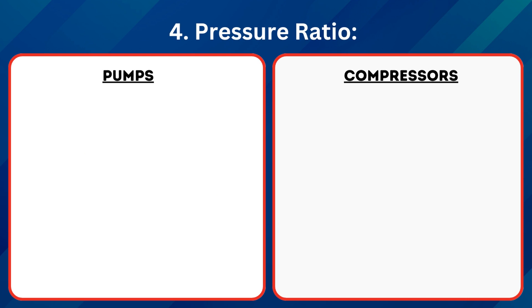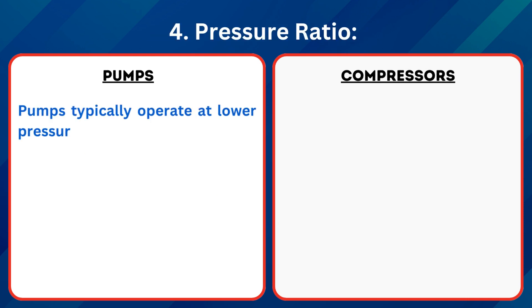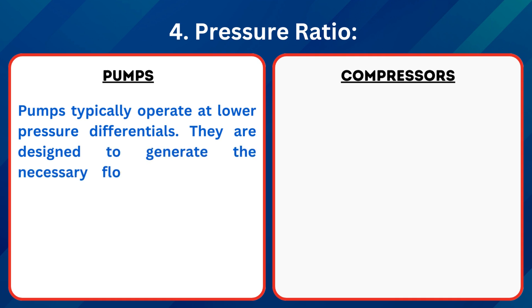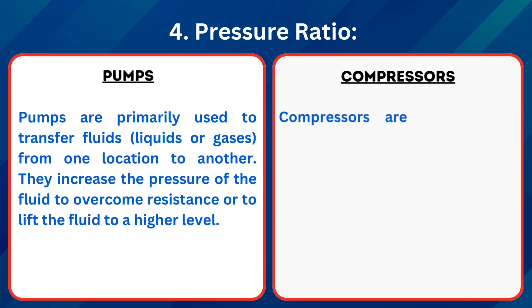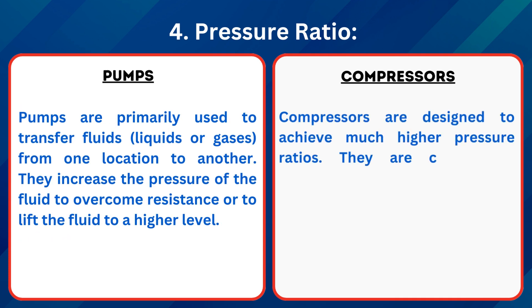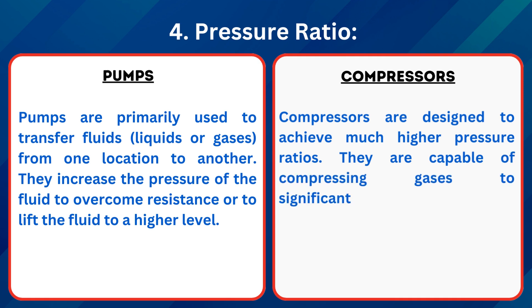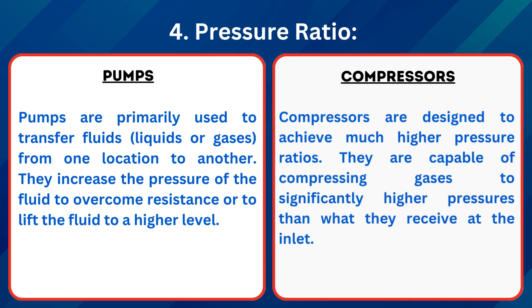4. Pressure Ratio: Pumps typically operate at lower pressure differentials. They are designed to generate the necessary flow rate to move fluids efficiently, without significantly increasing the fluid's pressure. Compressors are designed to achieve much higher pressure ratios and are capable of compressing gases to significantly higher pressures than what they receive at the inlet.